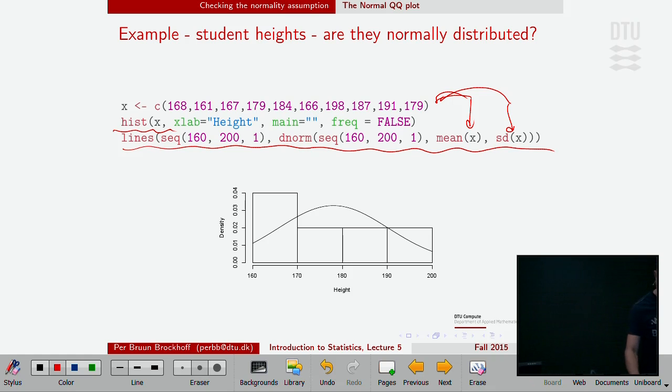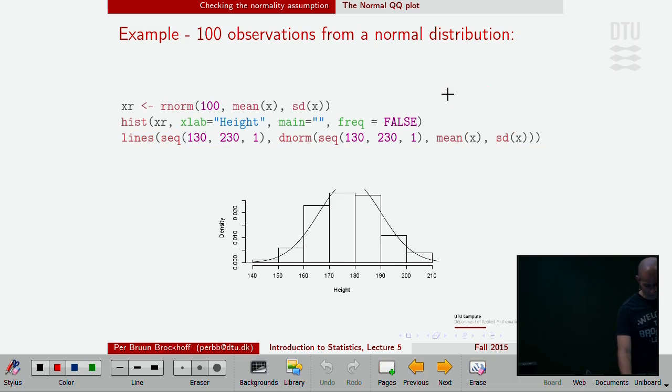A histogram of 10 observations is really difficult to use for anything, it will look very different from time to time. Here is a truly normally distributed thing, and again it looks pretty close, but it's very difficult to make a strong conclusion based on such a histogram. Even something which is truly normal, 100 observations coming from the rnorm function, doesn't fit exactly with the normal curve. On average it looks nice, but how can we use it?